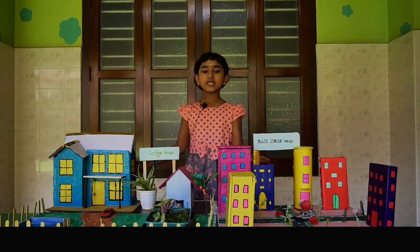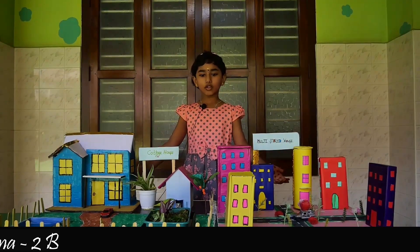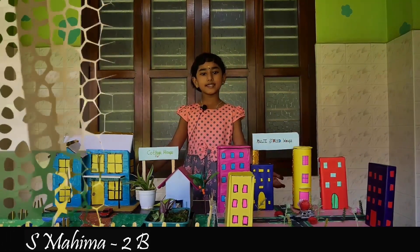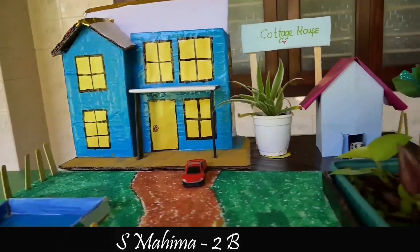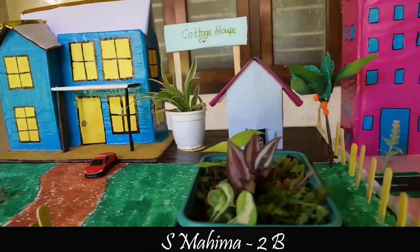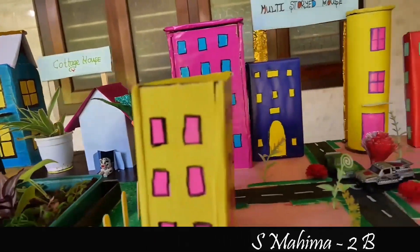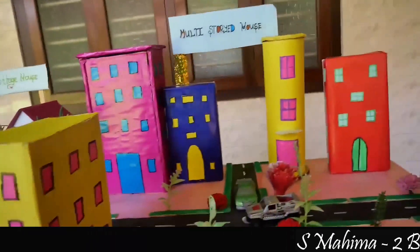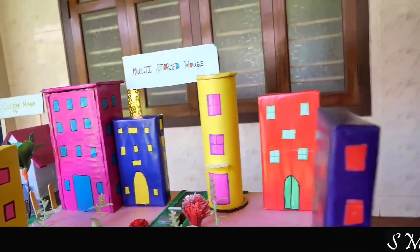This is a model showing Kaccha Houses in a city. Kaccha Houses are made using bricks, cement, steel ropes, wood, glass, and so on.